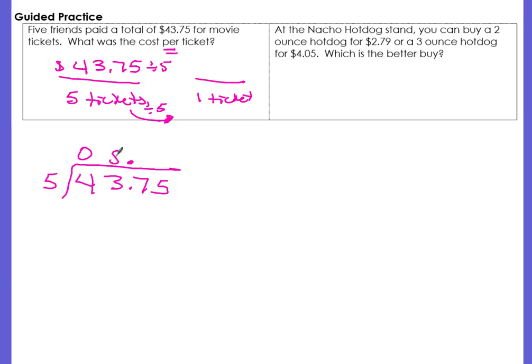Five goes into 43 8 times, which is 40. Bring down your 7. Five goes into 37 7 times, which is 35. And bring down this 5. 5 goes into 25 5 times. And now we have a zero remainder.